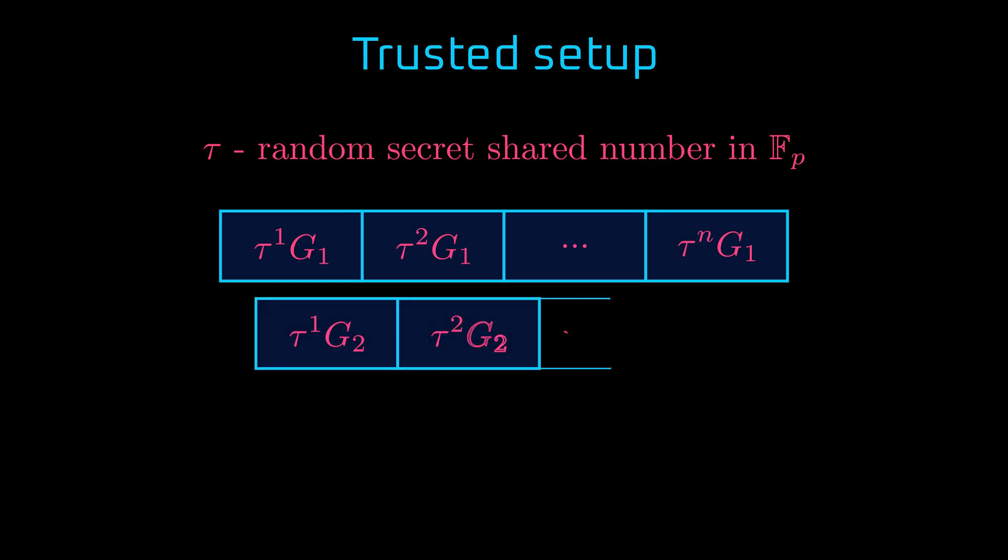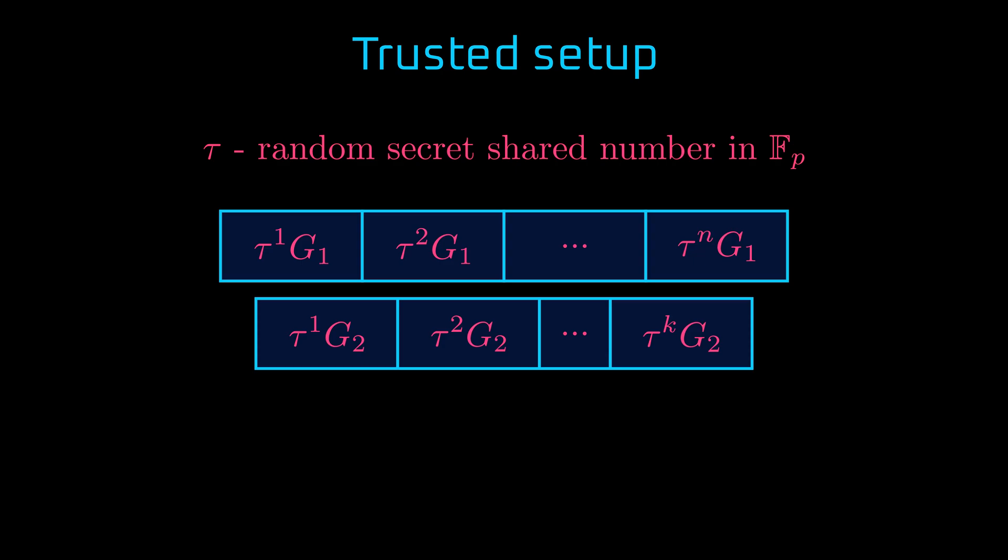But that is not all. We will encrypt tau using two different generator points from two different subgroups for the same elliptic curve. The second array, which is generated with G2, is much smaller than the first array. But wait! How come we can create such tables without anyone learning the tau?